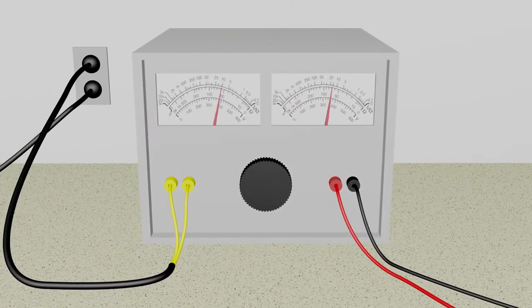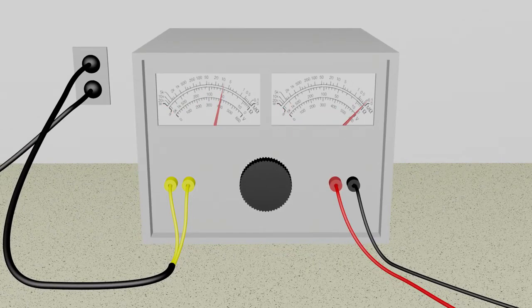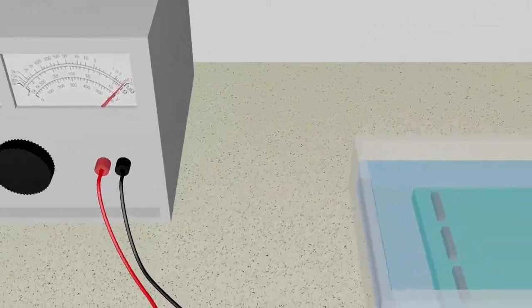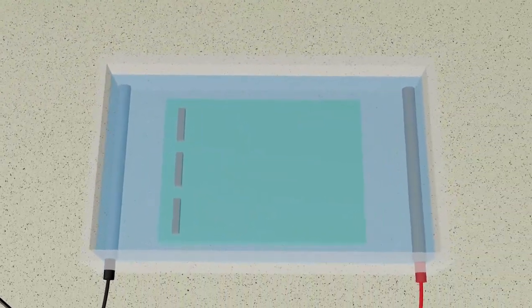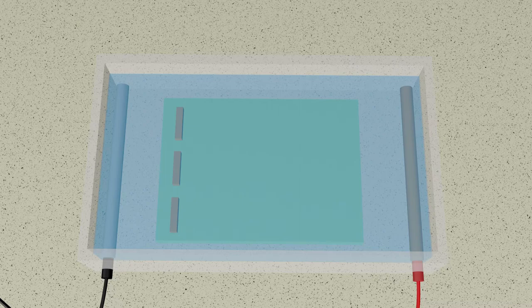A power supply takes the standard alternating current electricity available from a wall outlet and converts it into the one-way direct current needed to set up an electrical field across the gel. The gel box is the container that holds the gel submerged in running buffer.